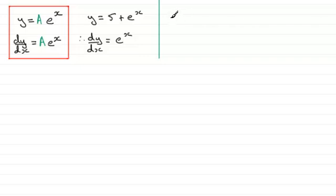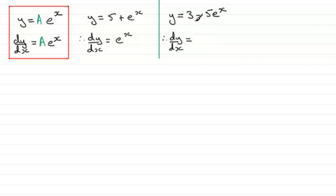Let's give an example where we use this. Say we have y equals 3 minus 5 multiplied by e to the power x. We therefore have dy/dx equaling: differentiating the constant term 3 gives 0, but in this term we've got the constant minus 5 multiplying e to the x. So according to our result it will be that constant minus 5 multiplied by the differential of e to the x, which is e to the x.